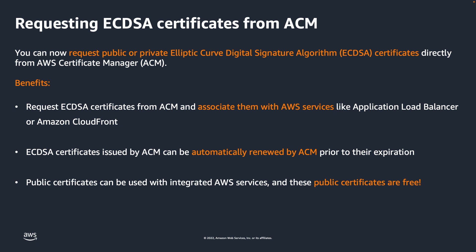Prior to the release of this feature, you could only request certificates with an RSA 2048 key algorithm from ACM. ECDSA certificates could be imported to ACM, but imported certificates cannot utilize managed renewal. You can now use ACM to request an ECDSA certificate and associate the certificate with AWS services like Application Load Balancer, or ALB, or Amazon CloudFront. As a result, you get the benefit of managed renewal, where ACM can automatically renew ECDSA certificates before they expire.